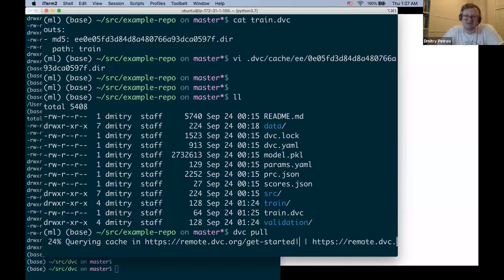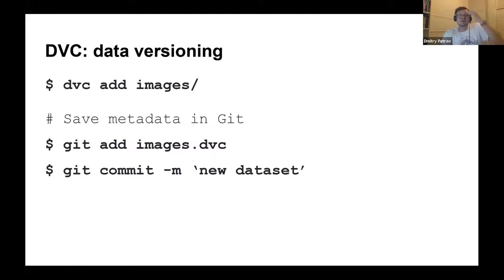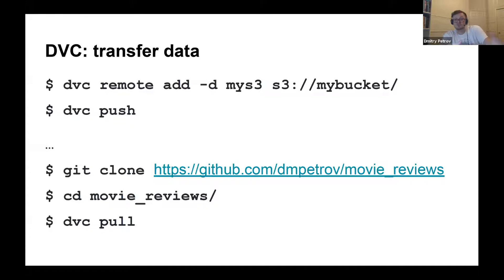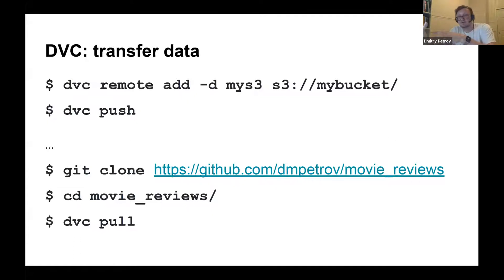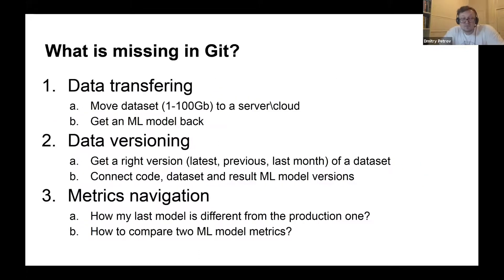For transferring files, you just use 'dvc pull' and 'dvc push' to move data around. Maybe you work in JupyterHub: when you start training, you pull data via 'dvc pull', bring the data there, and start working. When you need to fix your result, you do 'push', update your model or other data artifacts, and data gets synchronized with the data storage.